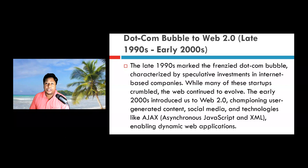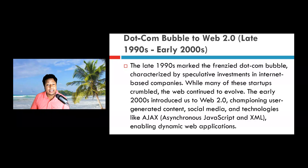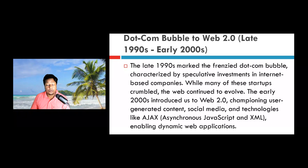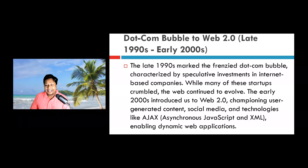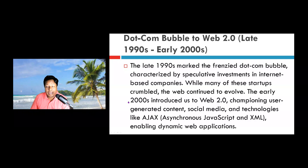The dot-com bubble through to Web 2.0 spans the late 1990s and early 2000s. The late 1990s marked the frenzied dot-com bubble, characterized by speculative investments in internet-based companies. While many of these startups crumbled, the web continued to evolve. The early 2000s introduced us to Web 2.0, championing user-generated content, social media, and technologies like Ajax — Asynchronous JavaScript and XML — enabling dynamic web applications.